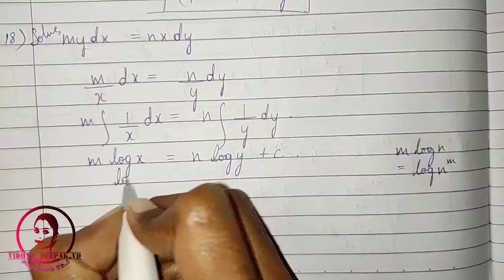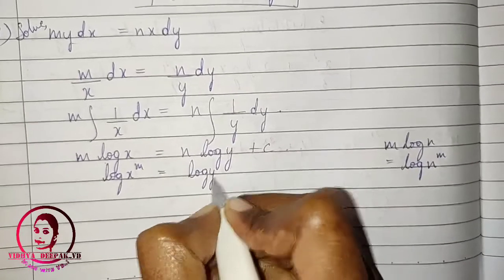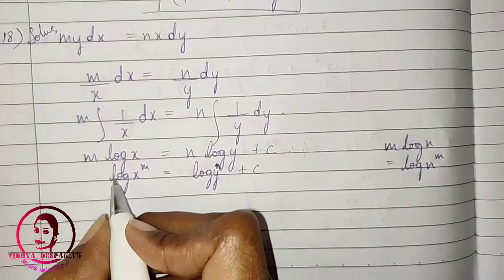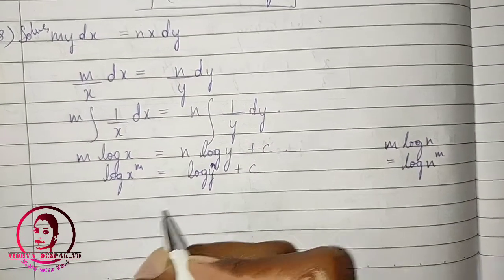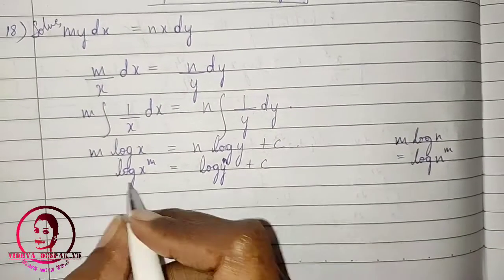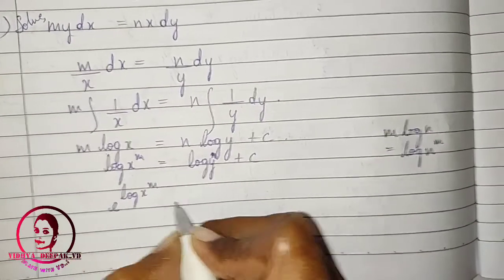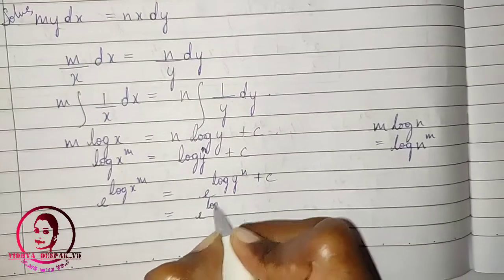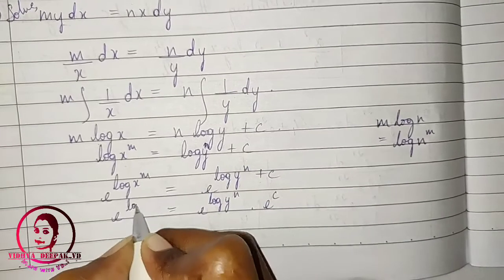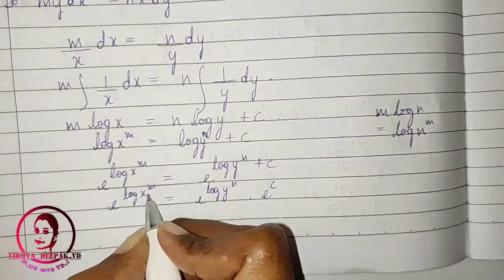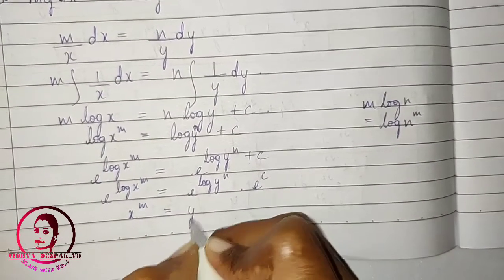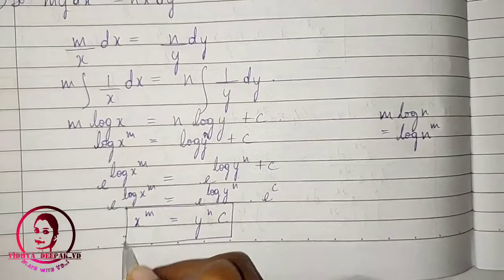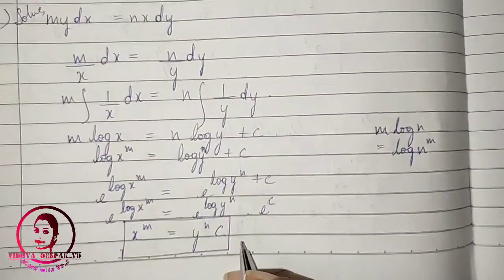Taking e to the power on both sides: e^(log(x^m)) = e^(log(y^n) + c), which gives x^m = y^n·e^c. Since e^c is a constant, writing it as c: x^m = c·y^n. This is the general solution. Since no particular values are given, we stop here.